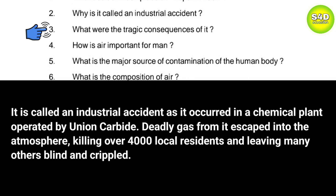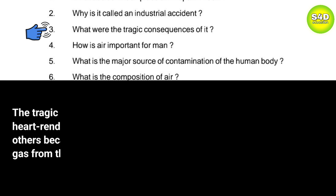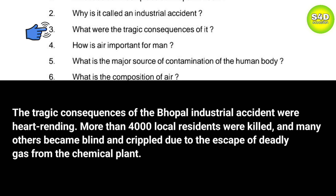Question 3: What were the tragic consequences of it? Answer: The tragic consequences of the Bhopal industrial accident were heart-rending. More than 4000 local residents were killed and many others became blind and crippled due to the escape of deadly gas from the chemical plant.